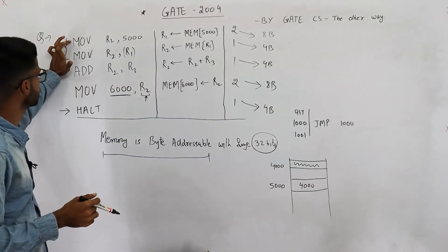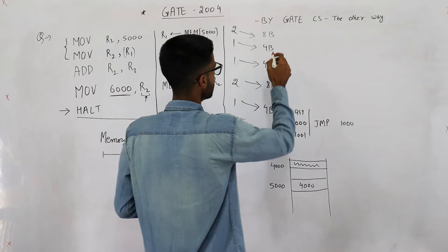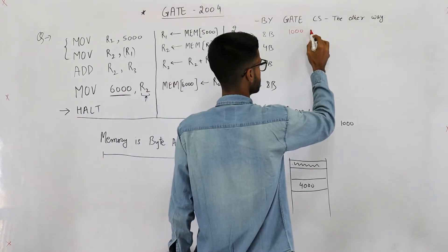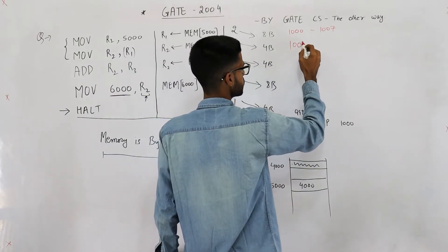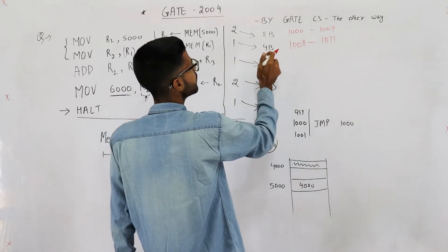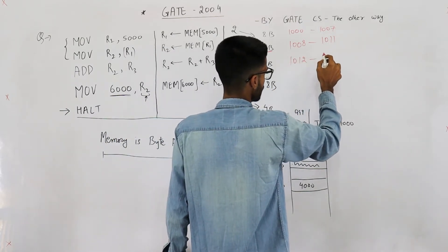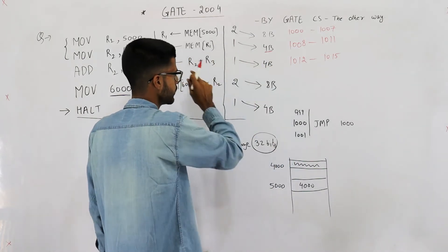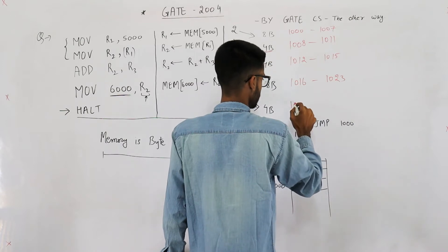Program execution begins from address 1000. Bytes numbered 1000 to 1007 contain the first instruction — eight bytes. From 1008 to 1011 are the four bytes of the second instruction. Bytes 1012 to 1015 contain the third instruction. You can continue mapping the remaining instructions in sequence through the memory addresses.